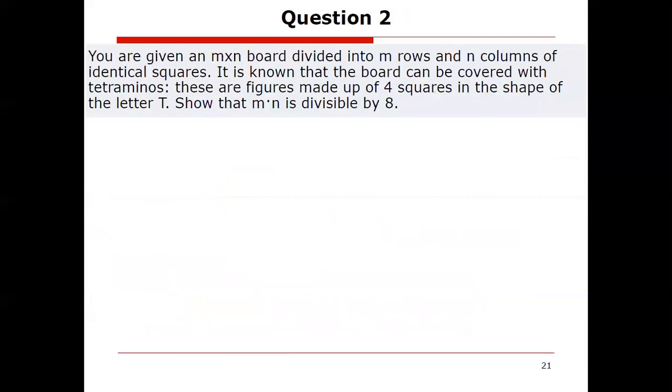Let's try another question. You are given an M by N board divided into M rows and N columns of identical squares. It is known that the board can be covered with tetrominoes. These are figures made up of four squares in the shape of the letter T. Show that M times N is divisible by eight. How do we go about this? Take a second, pause this video, give it a nice good think, and then come back to us.